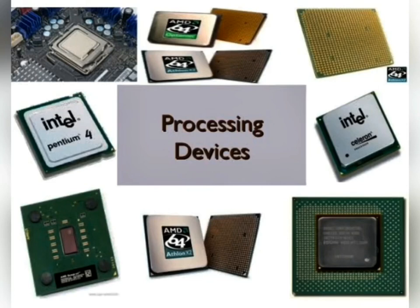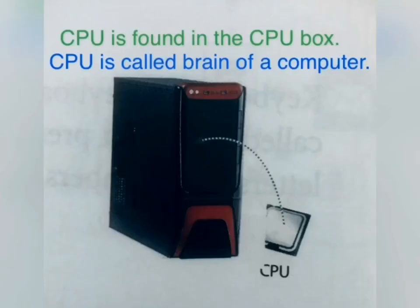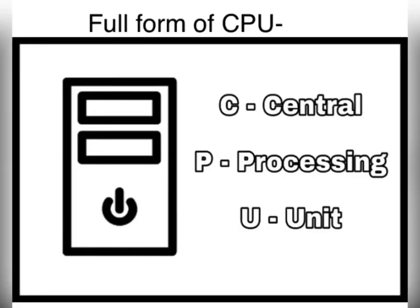Now let us study about the processing device. A computer processes data, and processing takes place in the CPU. So the CPU is a processing device. CPU is found in the CPU box. CPU is called the brain of a computer. The full form of CPU is Central Processing Unit — C stands for Central, P stands for Processing, and U stands for Unit.